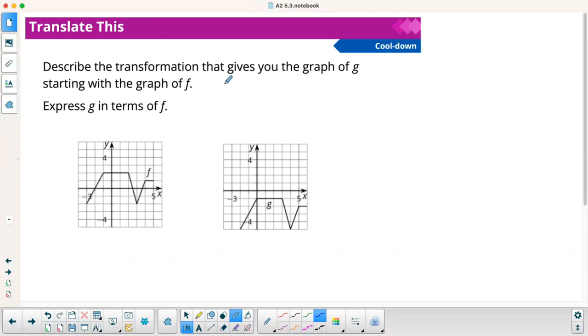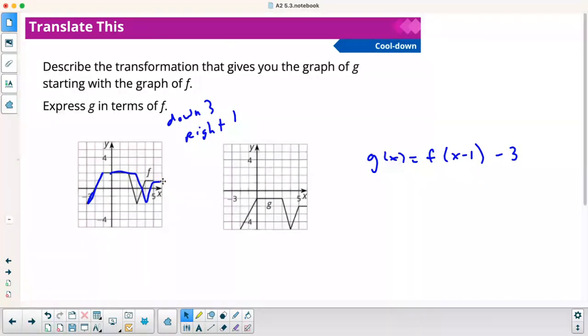All right. Last thing is our cool down. Describe the transformation that moves the graph of G starting with the graph of F. That gives you the graph of G starting with the graph of F. Express G in terms of F. So we want G of X equals. So what happens here? So it looks like I'm going to go to get there. Let's pick a specific point. Maybe this end point. Looks like I'm going to go down one, two, three, and right one. So it looks like I go down three, right one. So I'm going to take F. I need to go right one. So it's F of X minus one. That gives me the right one. And then down three is minus three. So I'm going to go right one, down three. And then this didn't come with me because I stopped tracing it in the middle. But there you go.